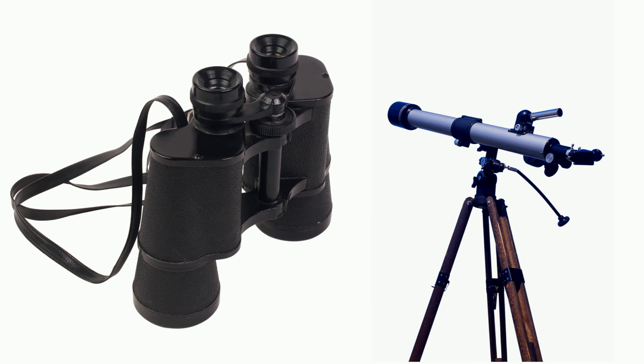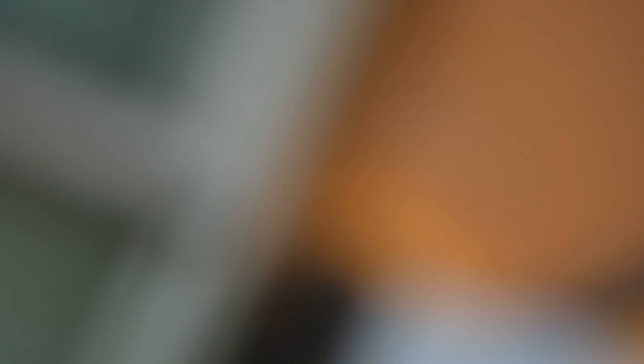Binoculars and telescopes use convex lenses to magnify objects and make them appear closer, but the image may be blurry. Therefore, binoculars and telescopes also use concave lenses in the eyepieces to help focus images more clearly for the viewer.